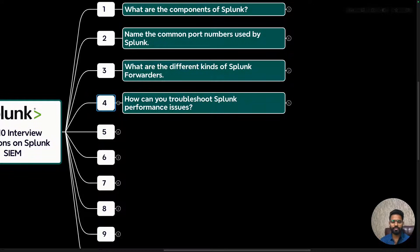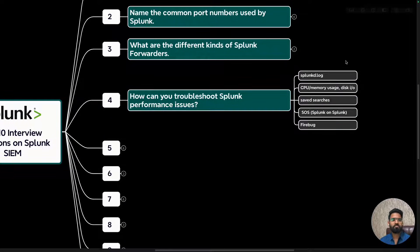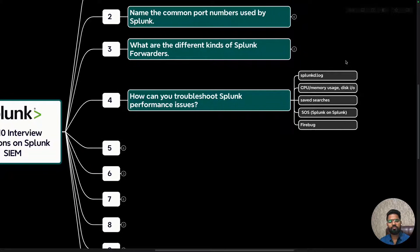Question four: how can you troubleshoot Splunk performance issues? This is a situational question — take some time and try to cover all the different possibilities you can think of. You can start by checking the splunkd daemon log file, which gives information about connectivity issues from the network or different components.